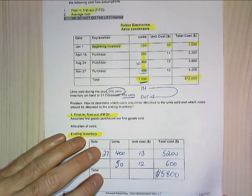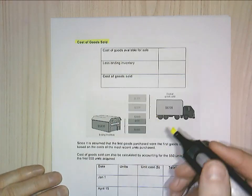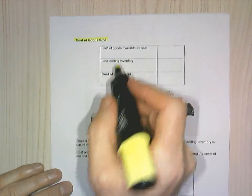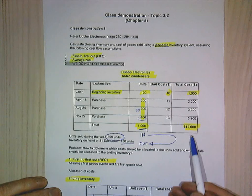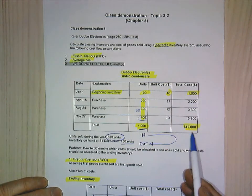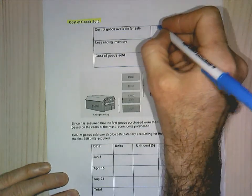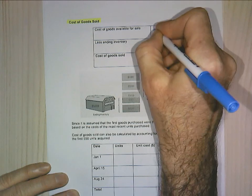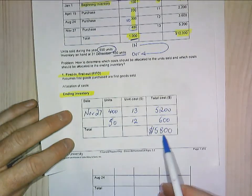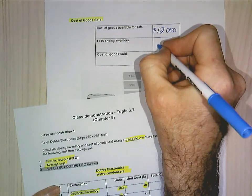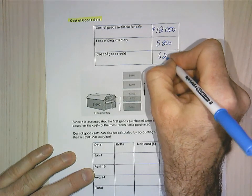Let's look at page two and calculate cost of goods sold. The cost of goods available for sale was $12,000 — that's what was available for sale through the period. Less my ending inventory of $5,800, that leaves me with cost of goods sold of $6,200.